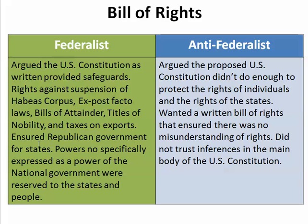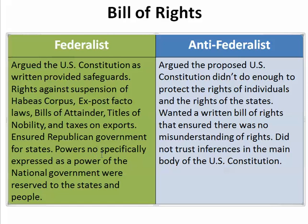They said that the U.S. Constitution, as it was proposed, ensured a Republican form of government for the states, and powers not specifically expressed as a power to the national government were reserved to the states and the people. But the Anti-Federalists said they didn't trust inferences — they wanted a Bill of Rights in writing.